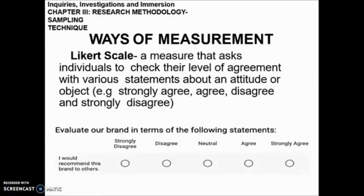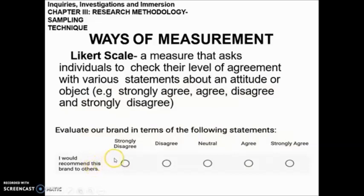What are the ways of measurement in research? First is the Likert scale — a measure that asks individuals to check their level of agreement with various statements about an attitude or object. We are very familiar with this: it is typically structured as strongly agree, agree, neutral, disagree, and strongly disagree. For example, when evaluating a brand, a statement might be 'I would recommend this brand to others,' and you simply choose one among the choices.